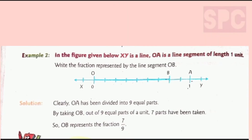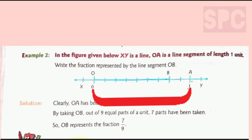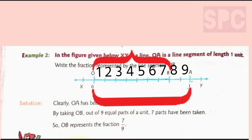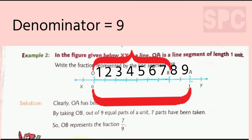Now let's take another example. In this figure, you can see there is a number line XY and on this number line OA is a line segment of length 1 unit. We have to write the fraction represented by the line segment OB. You can see the line segment OA is divided into how many parts? Let's count: 1, 2, 3, 4, 5, 6, 7, 8, 9. So the line segment OA is divided into 9 parts, which means our denominator will be 9.